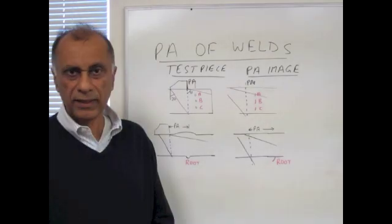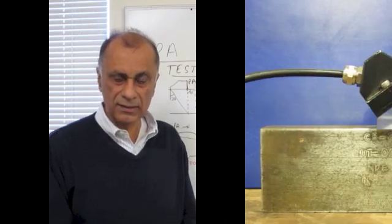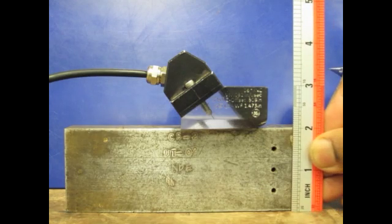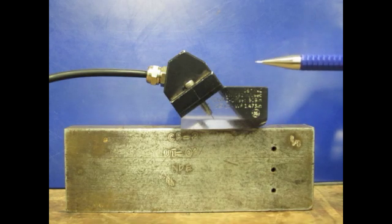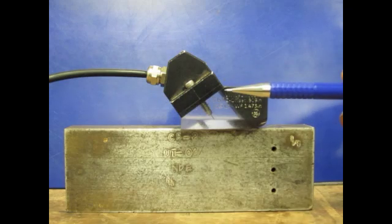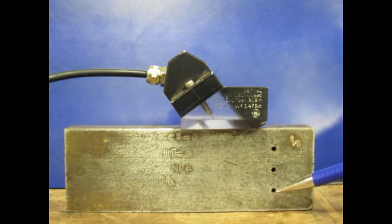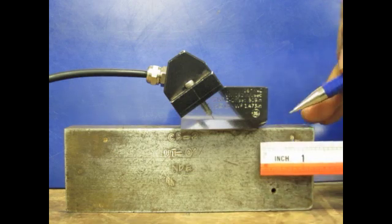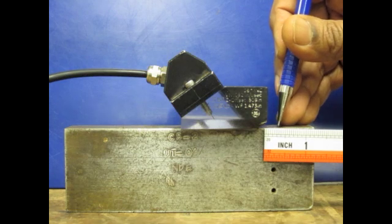Let's run a quick test on these two examples to describe the test process. This is example number one: a two-inch block with three side-drilled holes, and the phased array probe is placed here. This probe has 16 crystals with element size of 1.5 millimeters, giving a total aperture of 24 millimeters. The holes are at half inch, one inch, and one and a half inches. The PA distance is from the front of the wedge to the hole — approximately 0.35 inches.